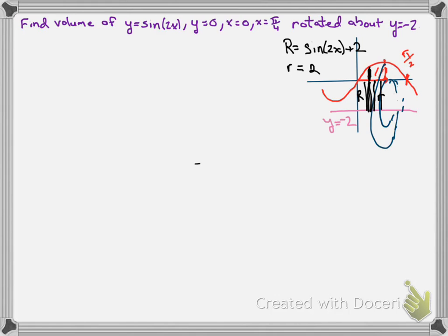This will allow us to set up our integral in the following format. And we can see from our drawing that our limits are just 0 to pi over 4. We're going to multiply by pi, and we're looking at the big radius squared minus the small radius squared. And we're doing this one in terms of x because we're going around an axis that is horizontal with the x-axis.